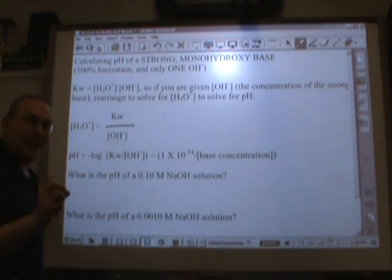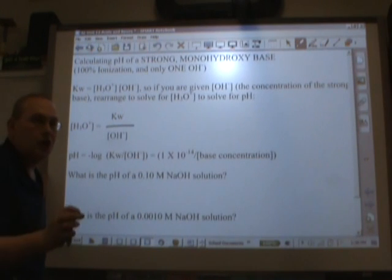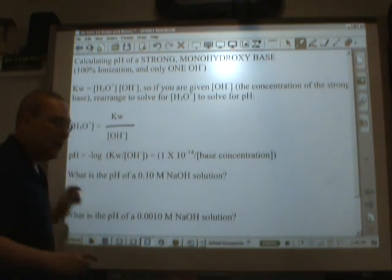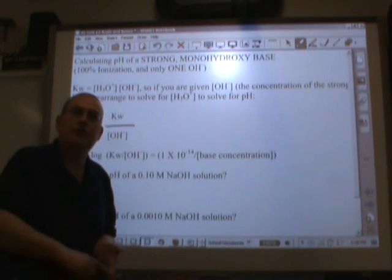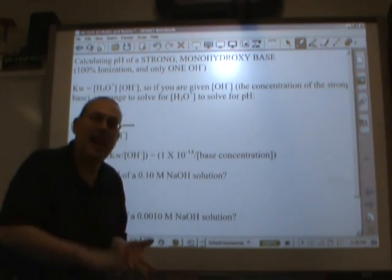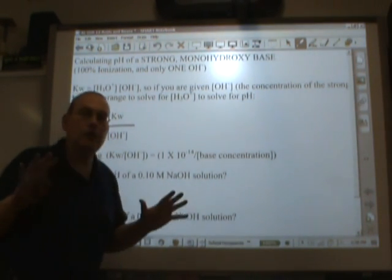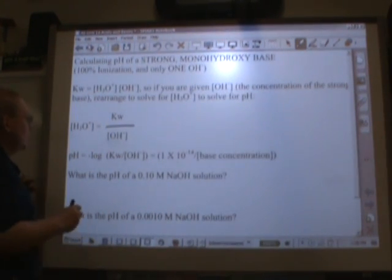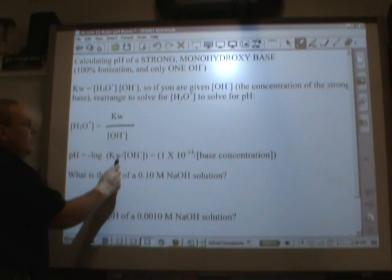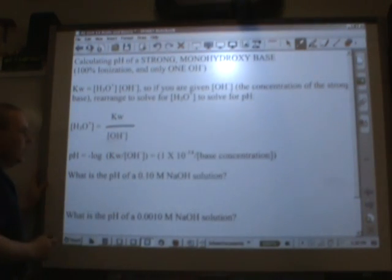this is only for bases that ionize 100%, that have one OH-. We're talking about alkali metal hydroxide, sodium hydroxide, lithium hydroxide, potassium hydroxide. You can't do this for any other kind of base, it's beyond the scope of this course. So you take the negative log of Kw divided by OH-, and that will give you the pH.